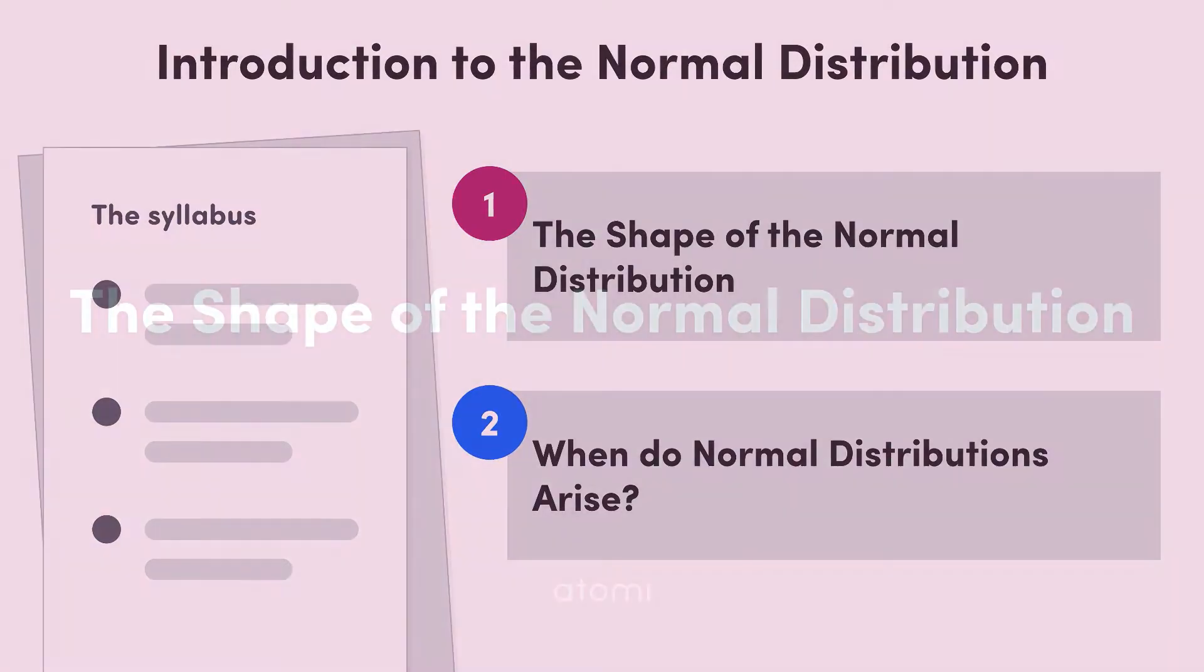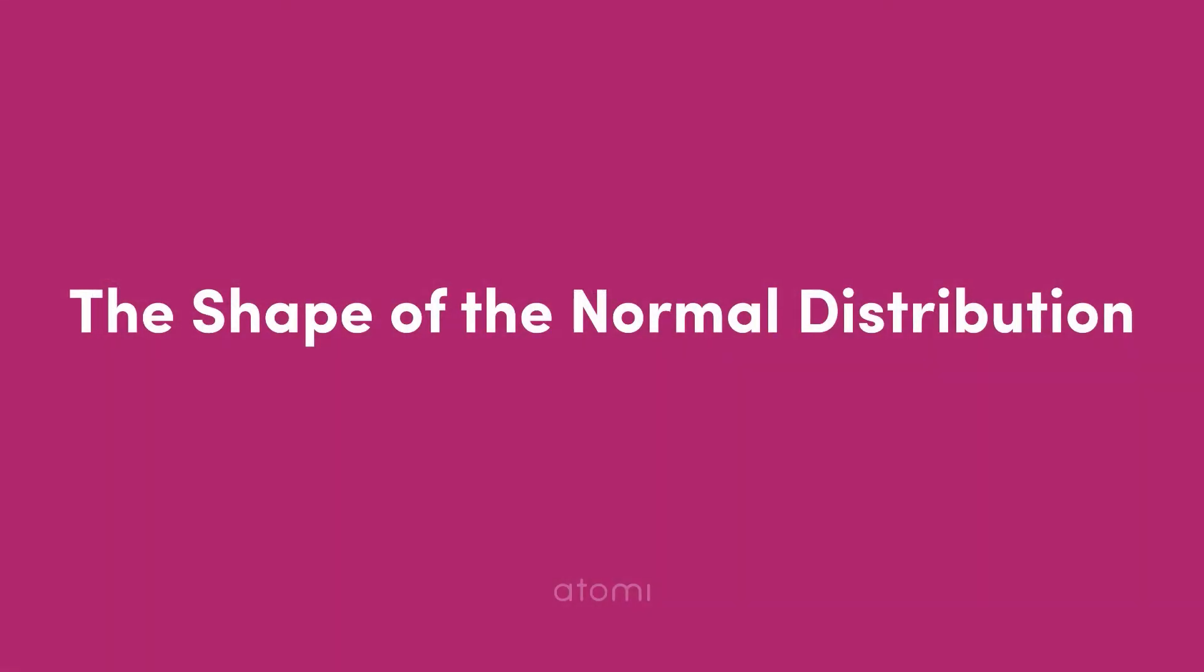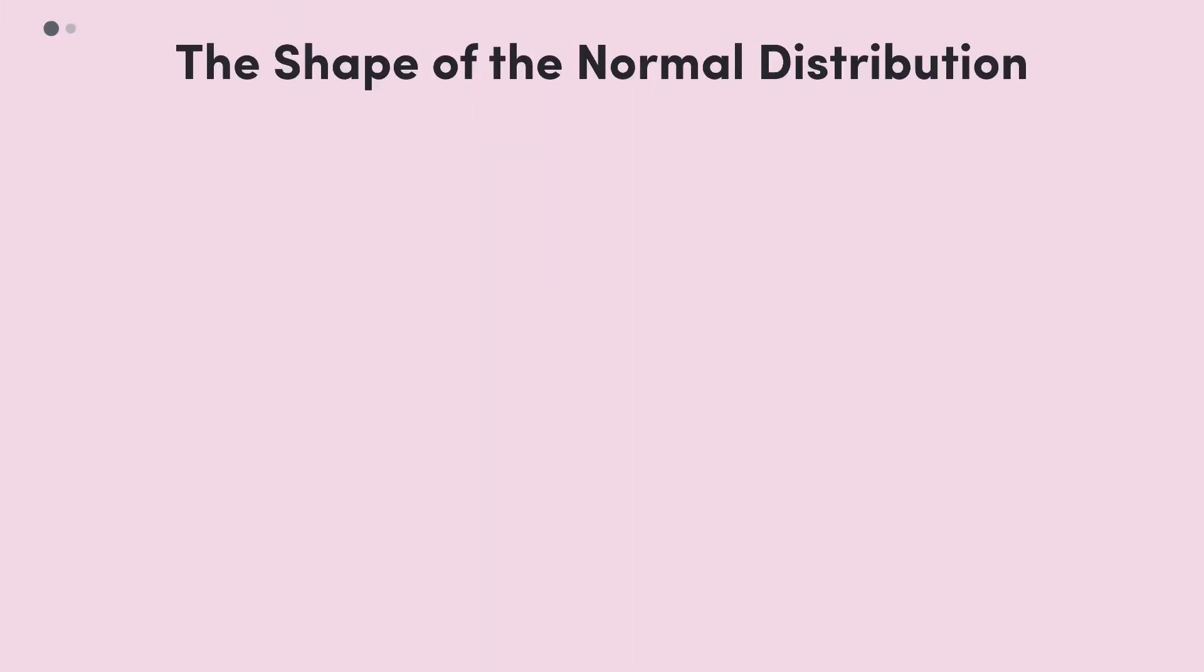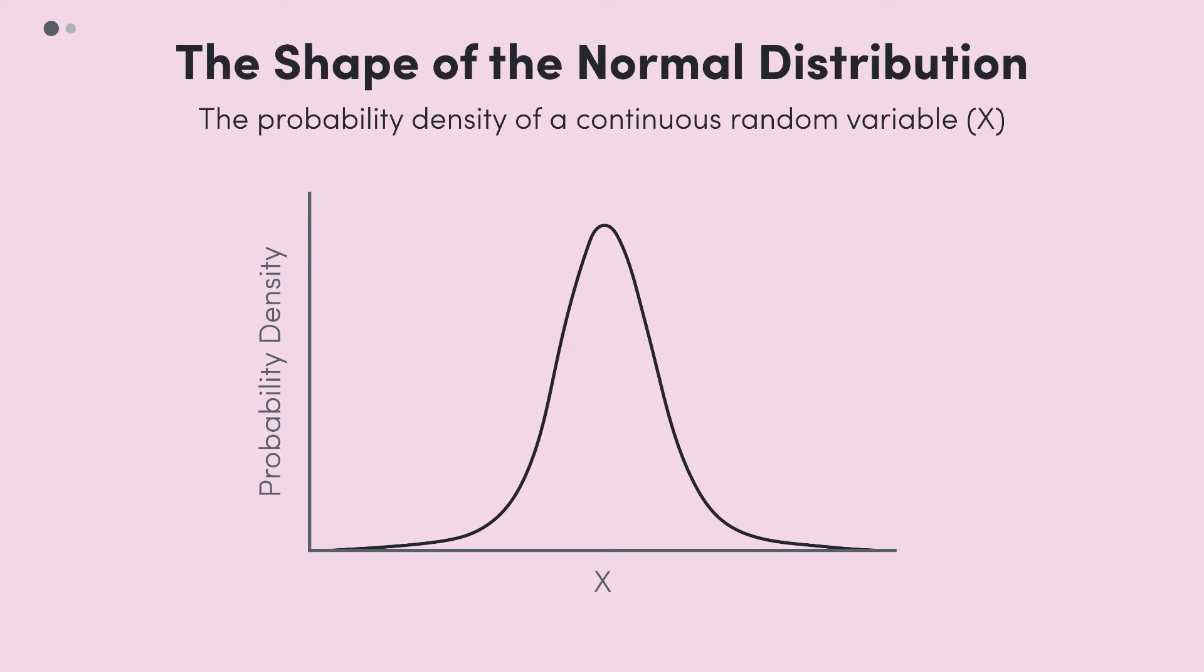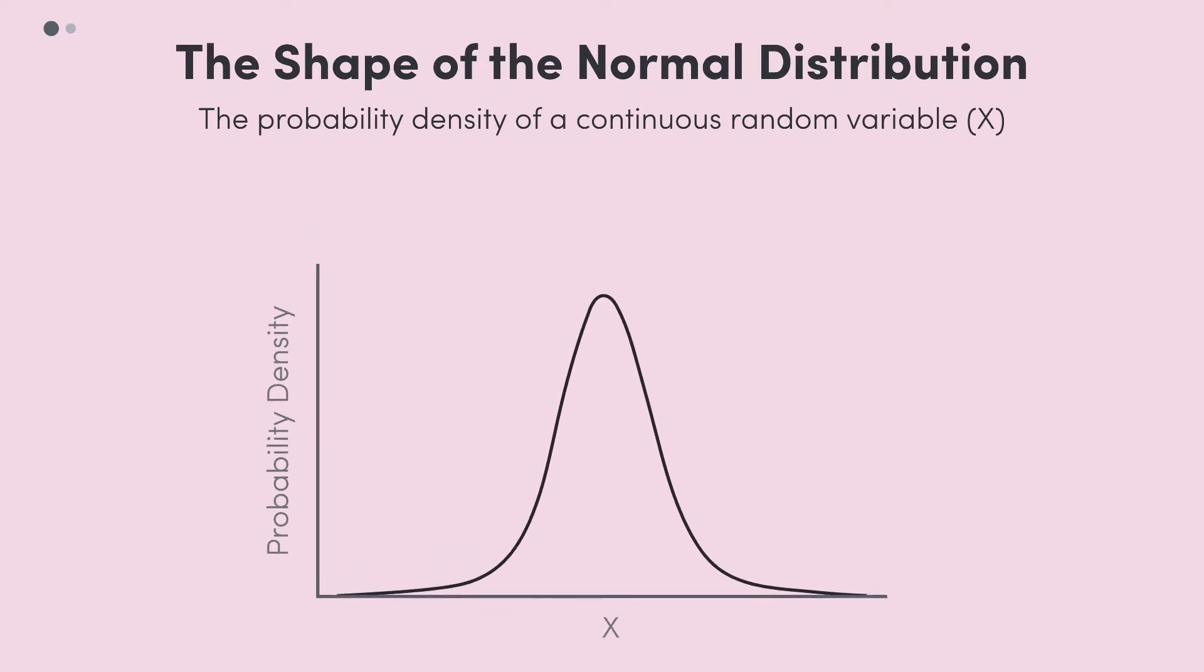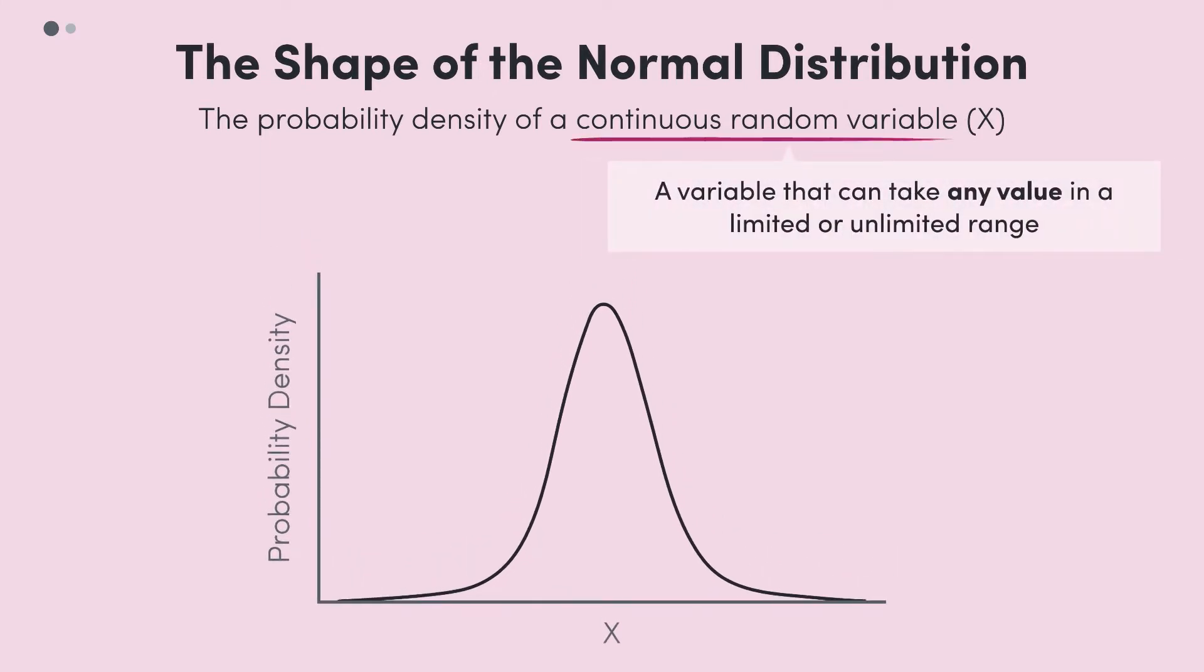Okay, so while you may not have heard of the normal distribution before, you've had some sort of interaction with them. They look like this. What this graph represents is the probability density of a continuous random variable. Remember that a continuous random variable is one that can take any value in a limited or unlimited range.